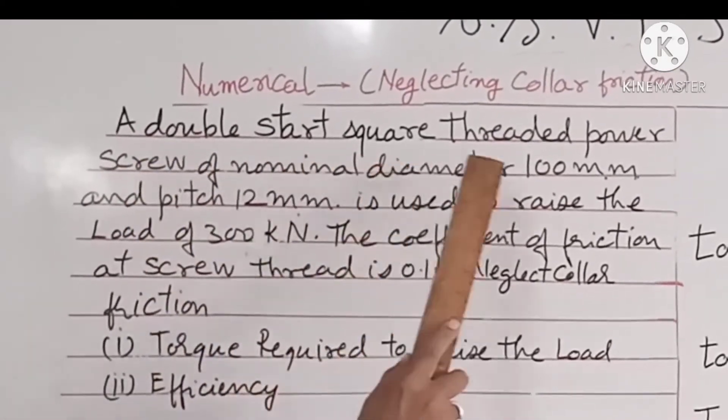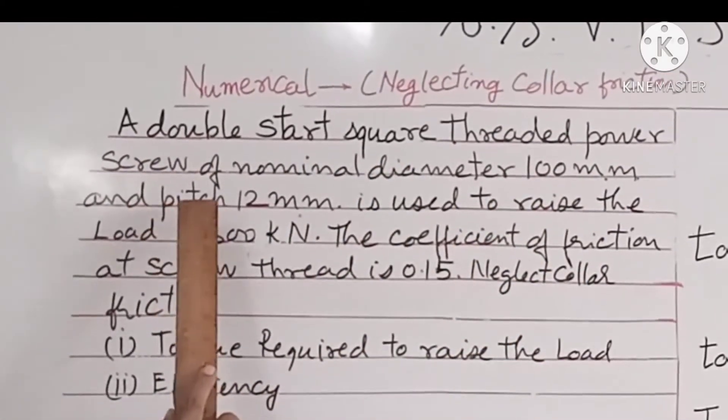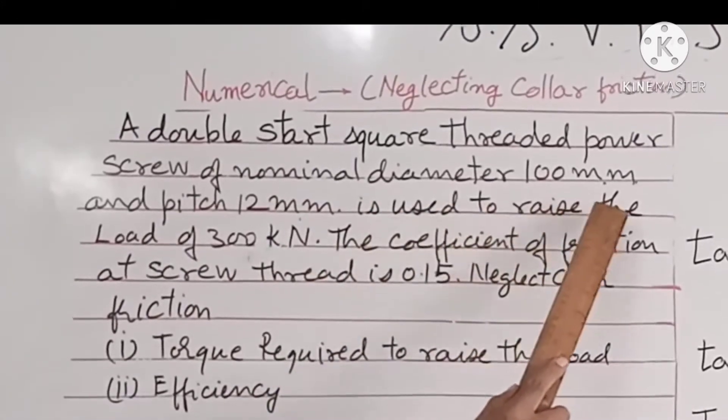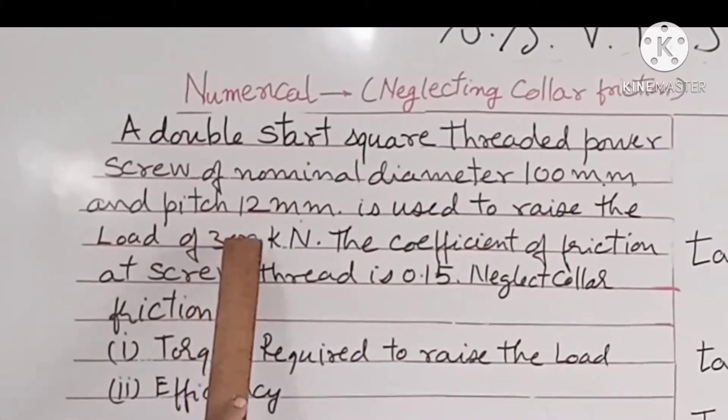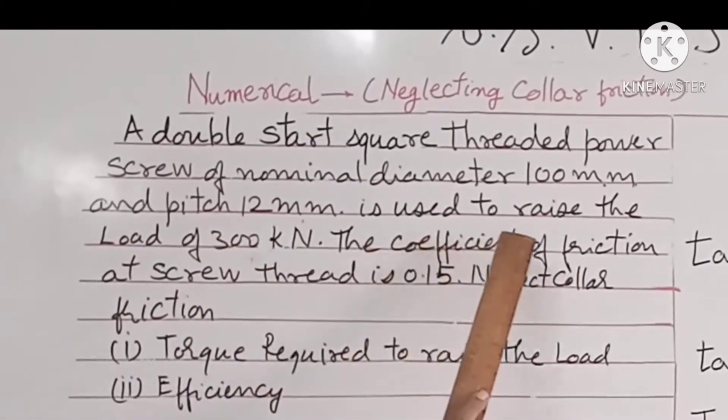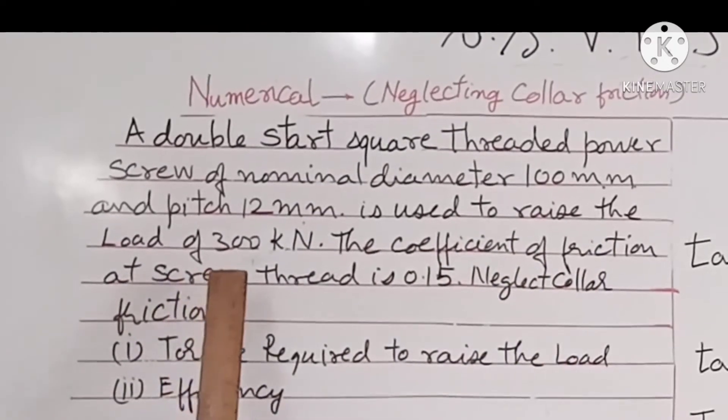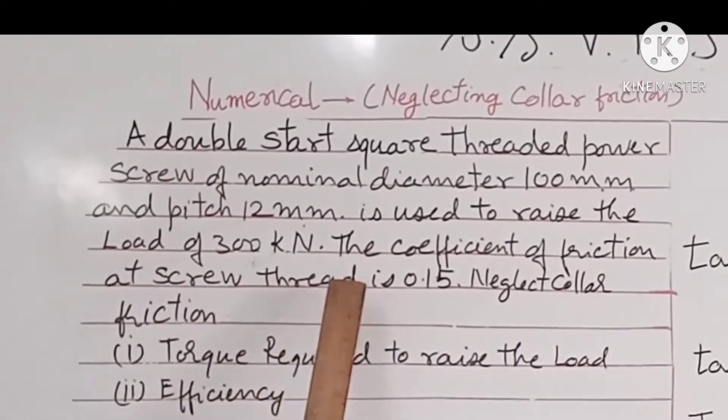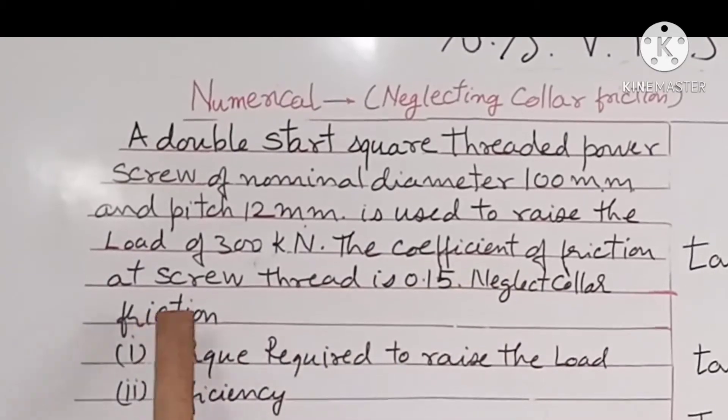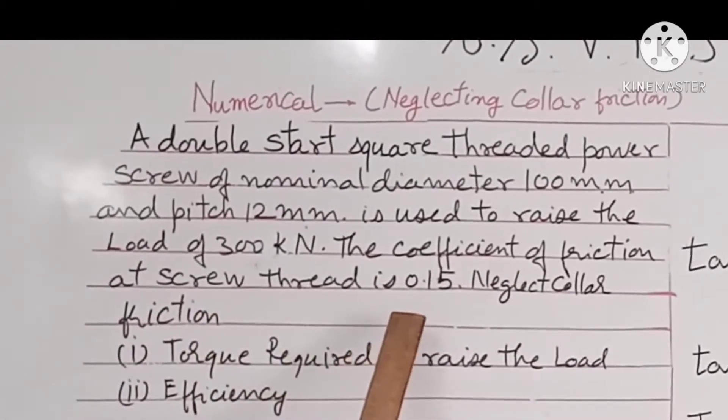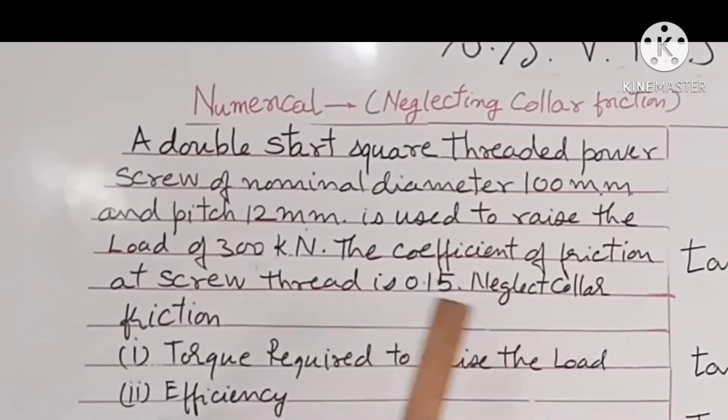A double start square threaded power screw of nominal diameter 100 mm and pitch 12 mm is used to raise a load of 300 kN. The coefficient of friction at the screw thread is 0.15. Neglect collar friction.